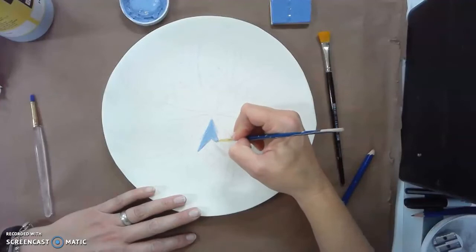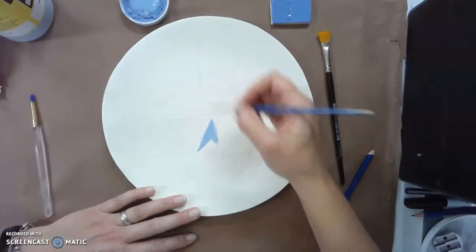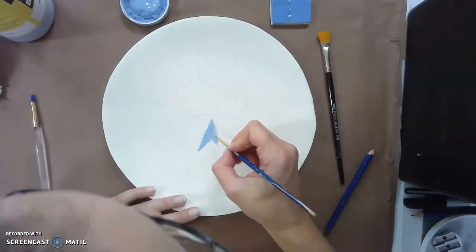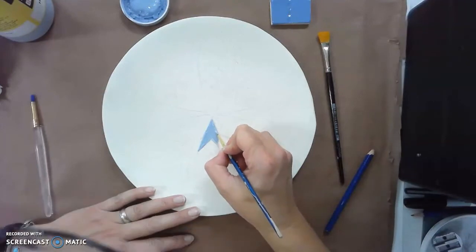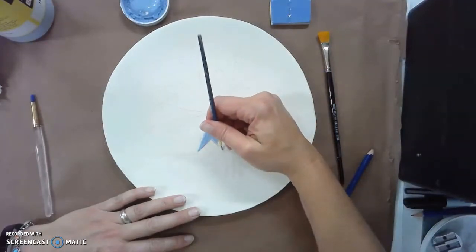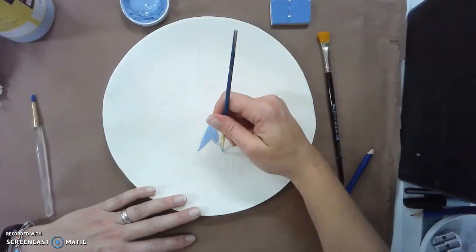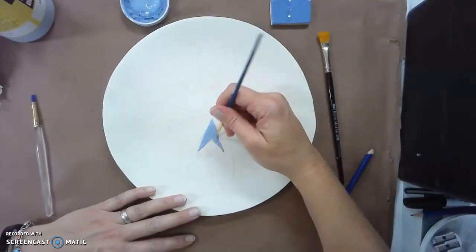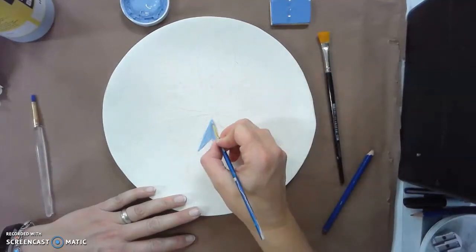Glaze is going to paint on kind of chalky, kind of thick, and it might appear uneven, but it will eventually in the kiln when it reaches to that almost 2,000 degrees that we go to, it will smooth out.